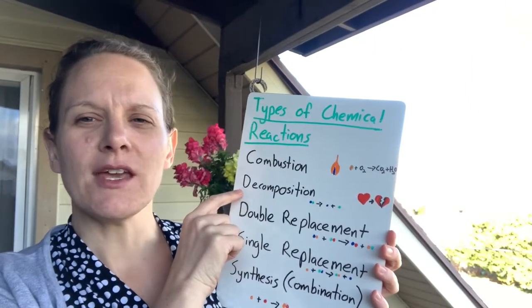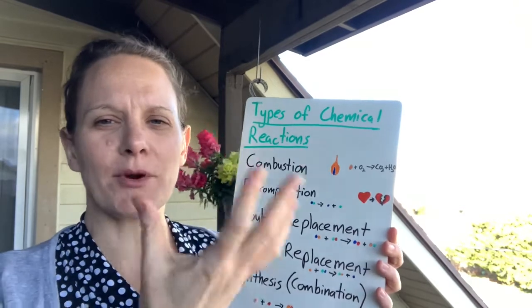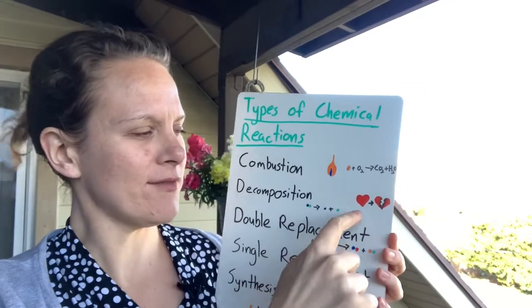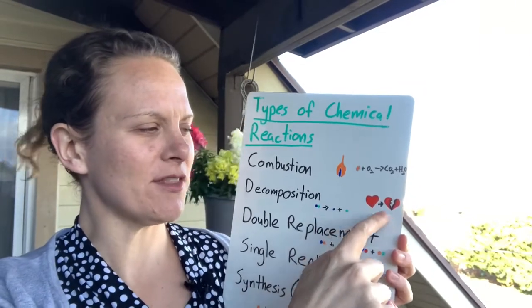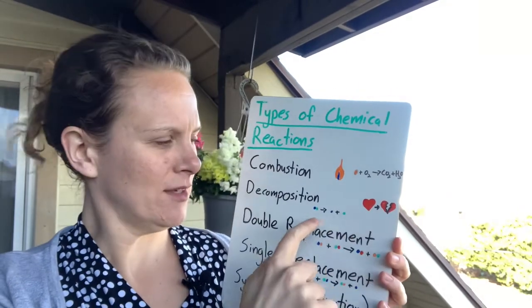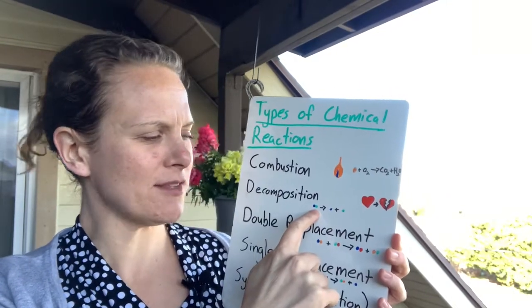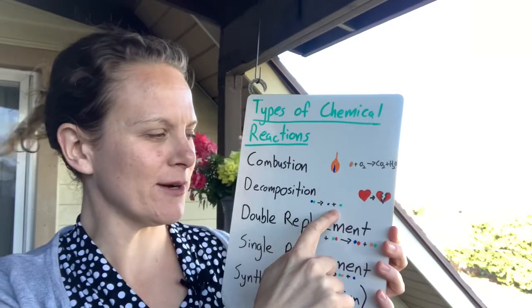Decomposition is when you have two things that are together that break apart. So I have an example here. A heart that's all together breaks into two pieces. Here we have two little colorful dots stuck together. They break apart into two different pieces.